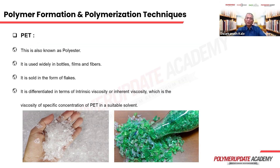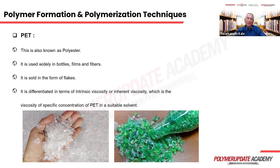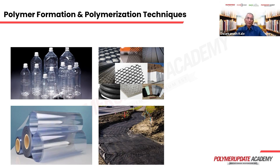PET, polyethylene terephthalate, commonly known as polyester, is used in bottles — the bottles we use for drinking water or beverages. It is also used in films for packaging and in fibers from which t-shirts or sari material can be made. PET is sold in flake form, which can be with or without color. PET is classified by its inherent viscosity, which is the viscosity of a specific concentration of PET in a given solvent.